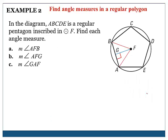We're going to find the angle measures in a regular polygon. In the diagram, ABCDE is a regular pentagon inscribed in a circle with center F. Find each angle measure. For part A, we're looking for angle AFB, which is our central angle — the first step in finding the area of a regular polygon. The central angle equals 360 divided by the number of sides. We have 5 sides, so 360 ÷ 5 = 72 degrees.